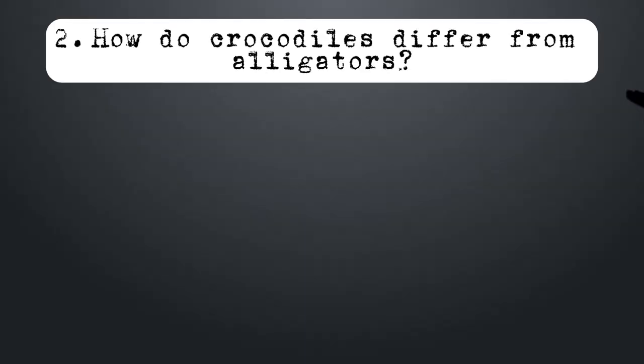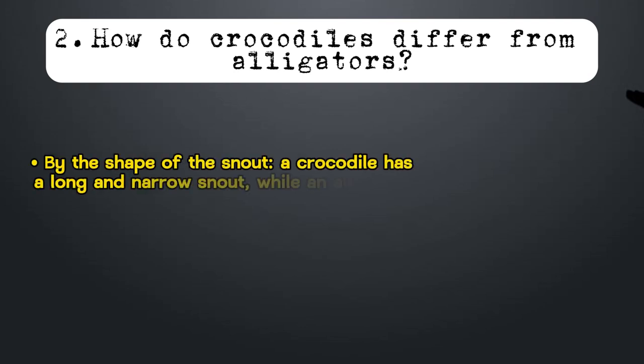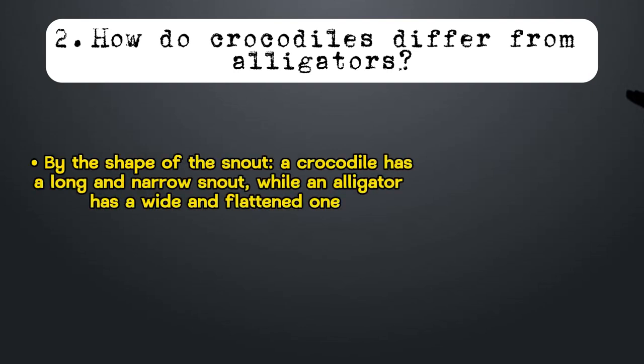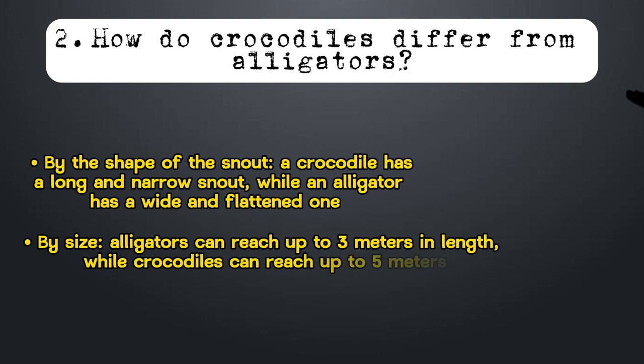How do crocodiles differ from alligators? By the shape of the snout — a crocodile has a long and narrow snout, while an alligator has a wide and flattened one. By size, alligators can reach up to 3 meters in length, while crocodiles can reach up to 5 meters.